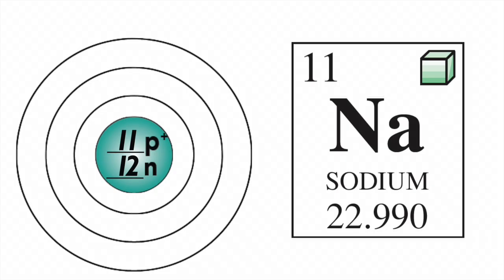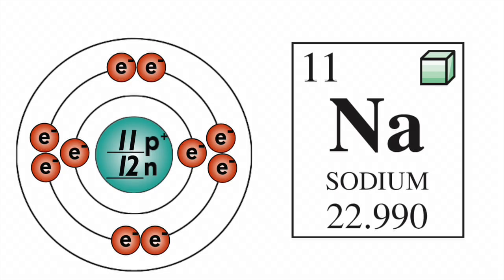Following the octet rule, we'll put the first two electrons in the first orbital. We'll fill the second orbital with eight electrons. 2 plus 8 is 10. 11 minus 10 is 1. That one lone electron is going to go by itself in the third orbital.